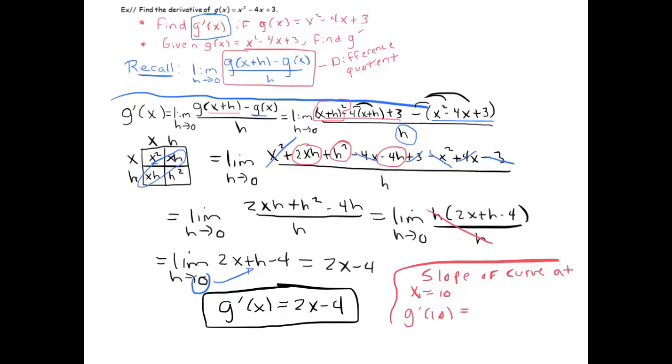g'(10) equals 2 times 10 minus 4. So that's 20 - 4 = 16. The slope of the curve is 16. That's much more powerful. This function is much more powerful than that other definition for which we were finding the derivative at a particular point.